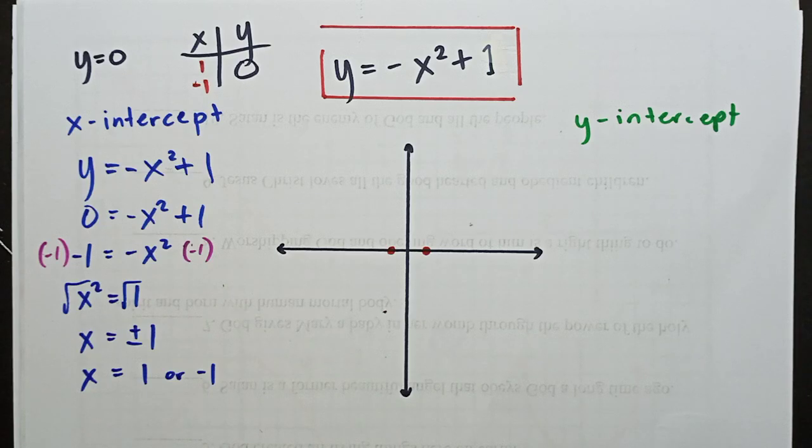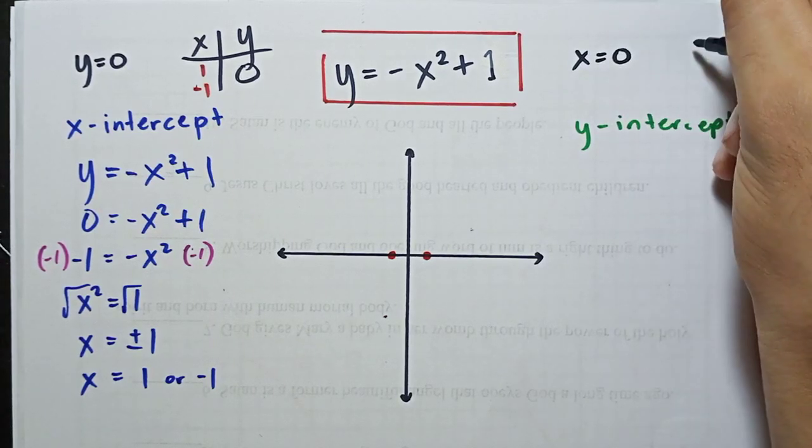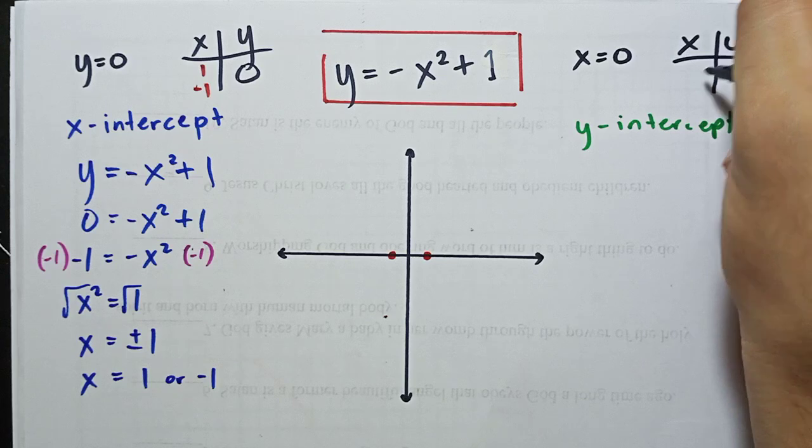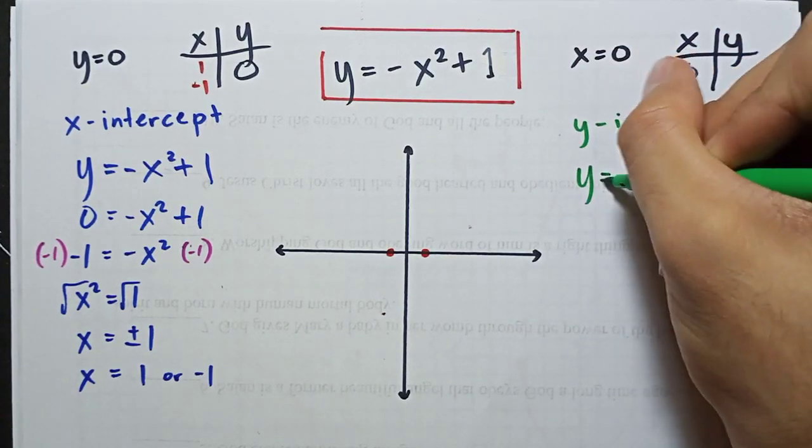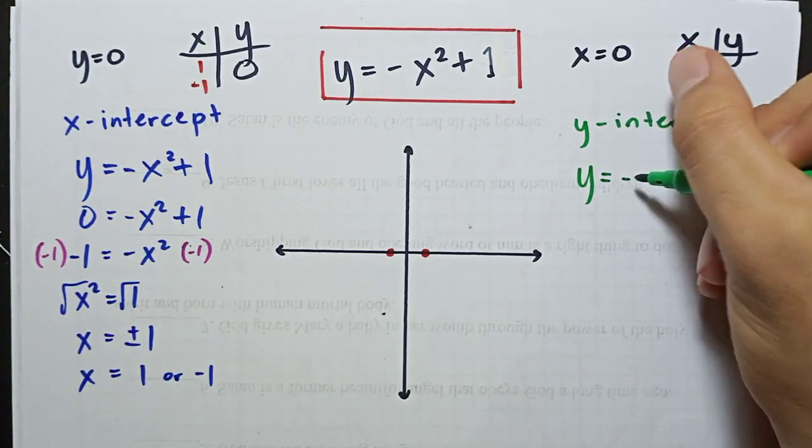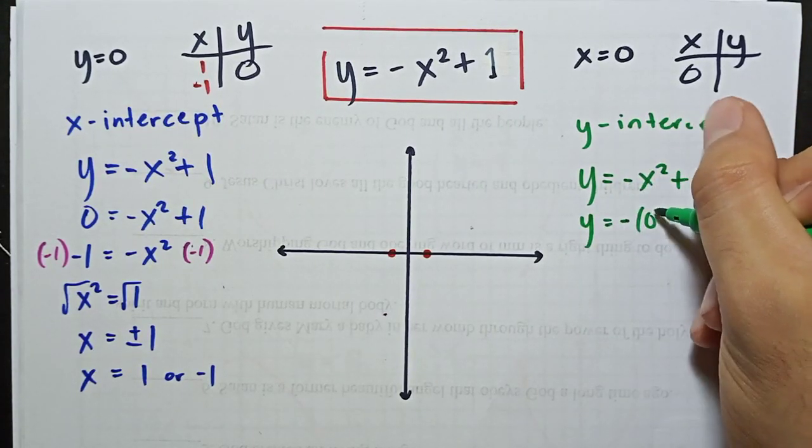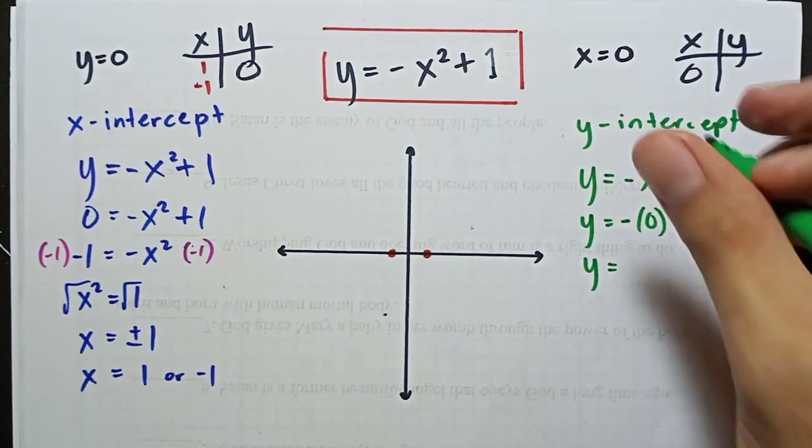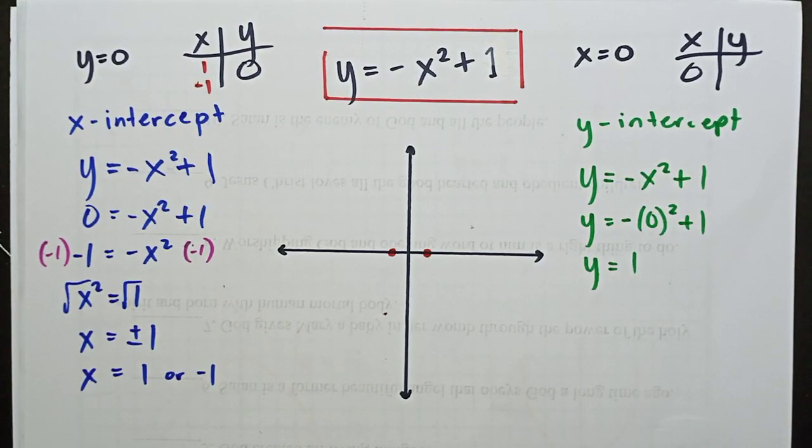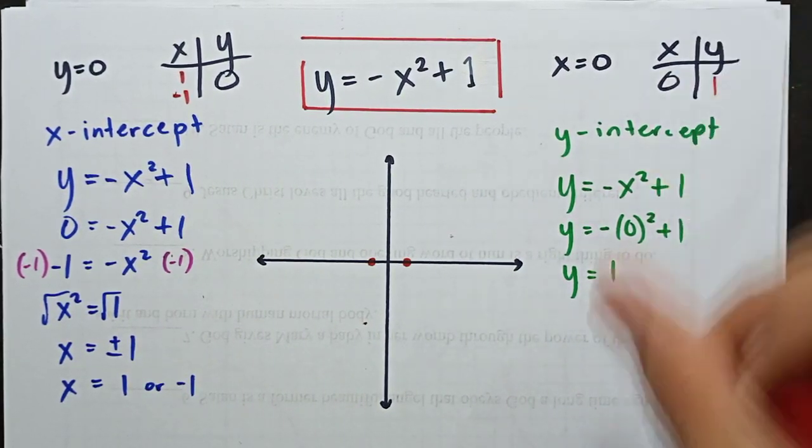Next, y-intercept. What we do for the y-intercept is the opposite of x - our x becomes 0. x, y, table. What is the value of y when our x is equal to 0? Back to our equation. y equals negative x squared plus 1. Then, y equals negative 0 squared plus 1. It becomes y equals 0 squared is 0. What remains is 1. So y equals 1. When our x is 0, our y is 1. That's our y-intercept.